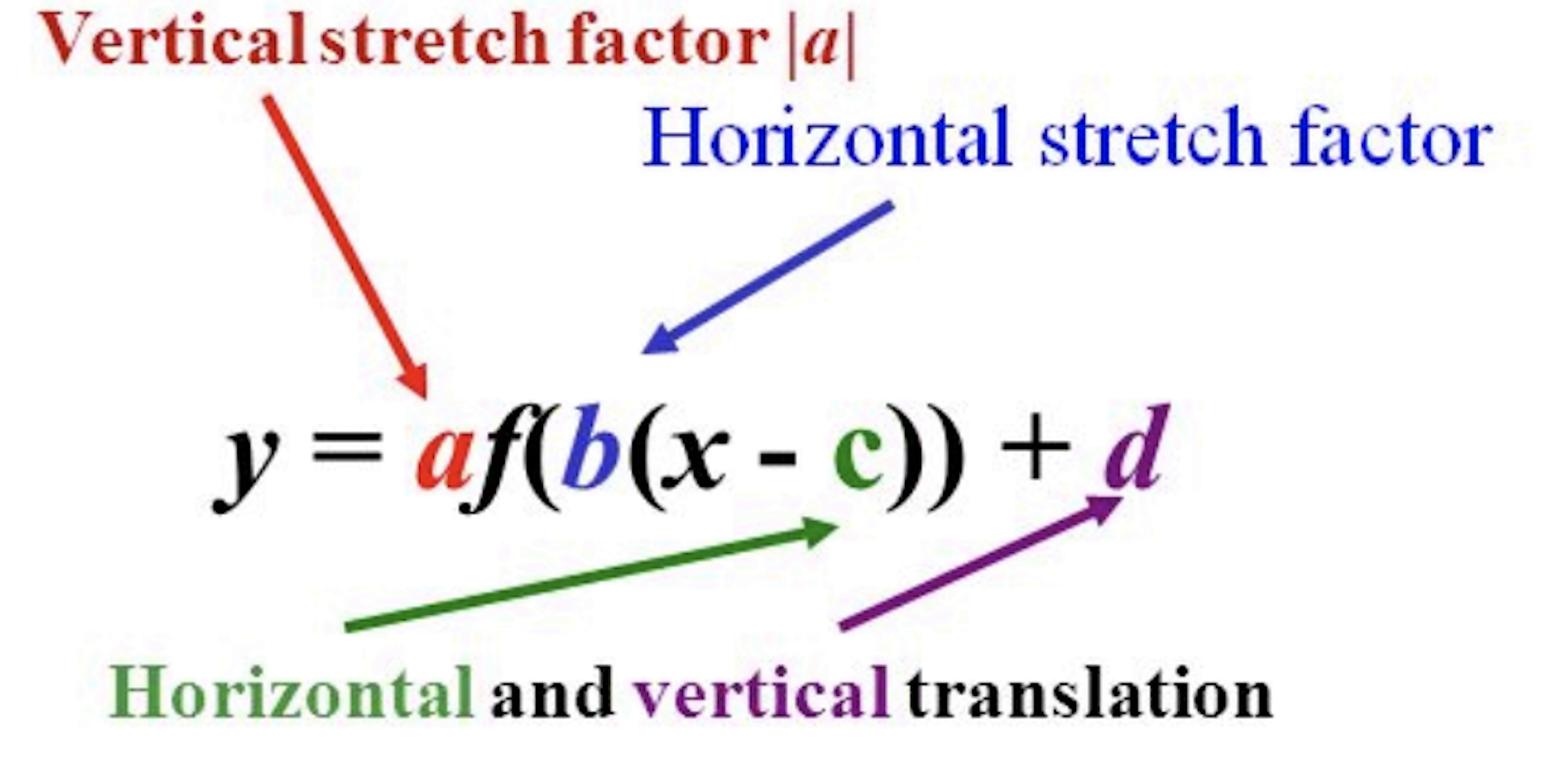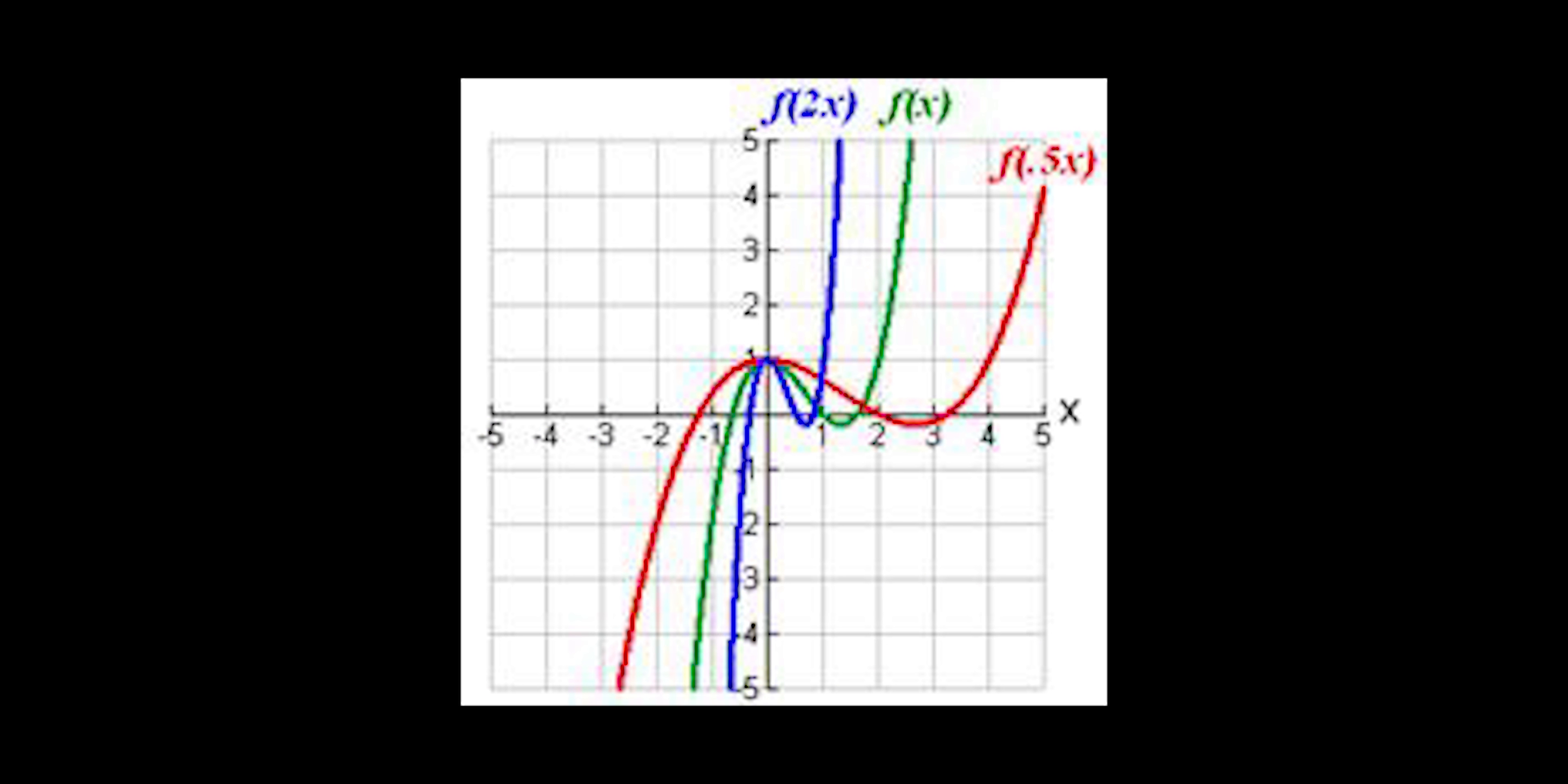Next, b stands for the horizontal stretch or compression. This is a bit confusing, but you basically switch what you do for vertical stretches and compressions. To get a horizontal stretch, 0 must be less than b, which is less than 1. And a horizontal compression means b is greater than 1.